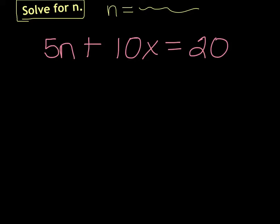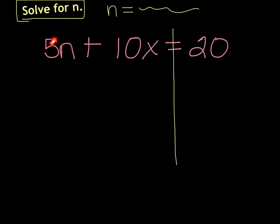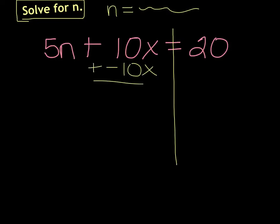We are going to solve it just like we solve normal equations. I'm going to draw my line down through the equal sign. I notice here's the 5n. I want to get this all by itself because I want to solve for n. So I need to look — what's over here with this 5n? Well, I see there's this plus 10x. I want to get rid of that first. So I'm going to subtract 10x, or add a negative 10x to this side.